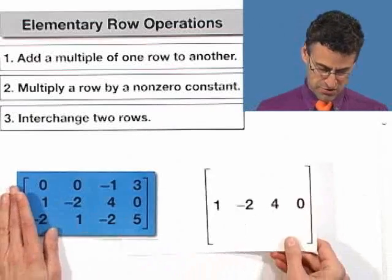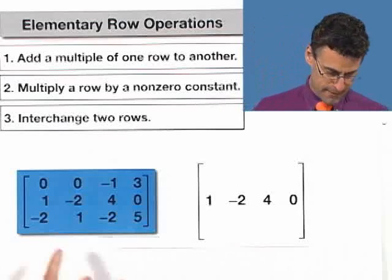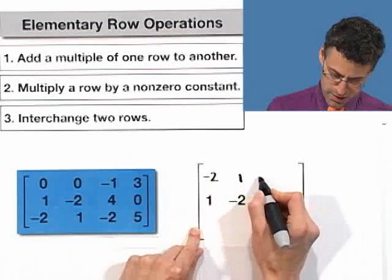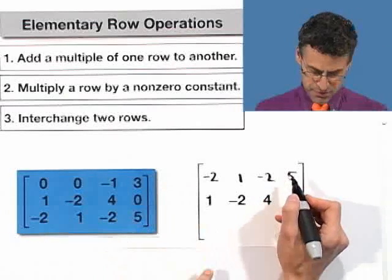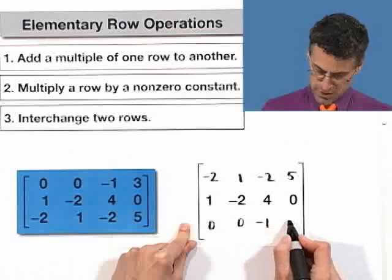So how would that look? Well notice that the second row is going to be untouched, so I won't even touch that. But I'm going to write this one up here: negative 2, 1, negative 2, 5. And I'm going to write the first row now in the third row spot: 0, 0, negative 1, 3.